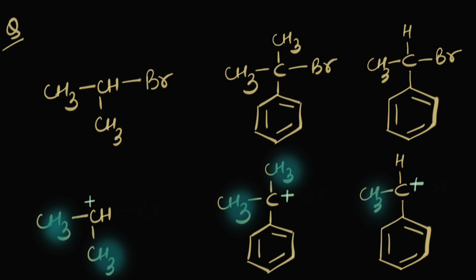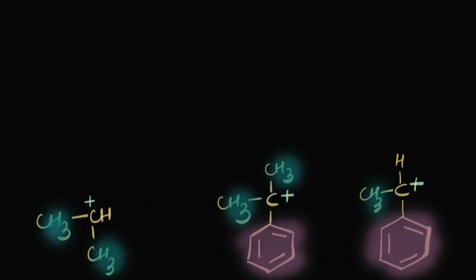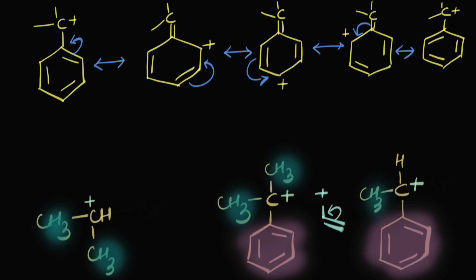But is hyperconjugation going to be the only factor here? I can see benzene rings — is there a possibility of resonance? I can see a positive charge alternate to the pi bond. Let's try resonance. Drawing the resonating structures, I can see the positive charge is spread out across the entire ring. That happens in both the second and third cases.